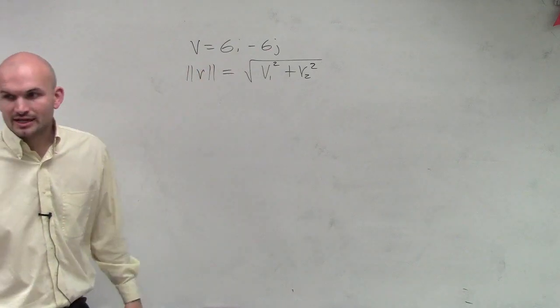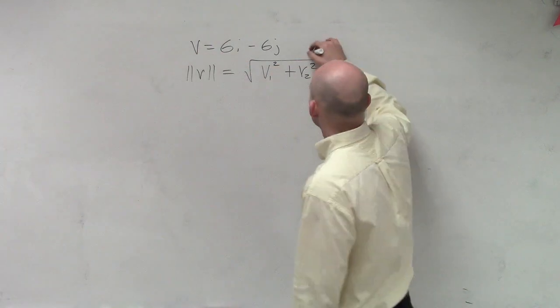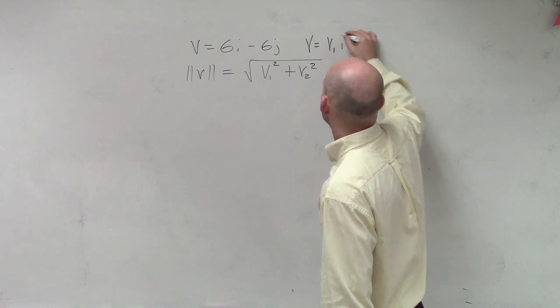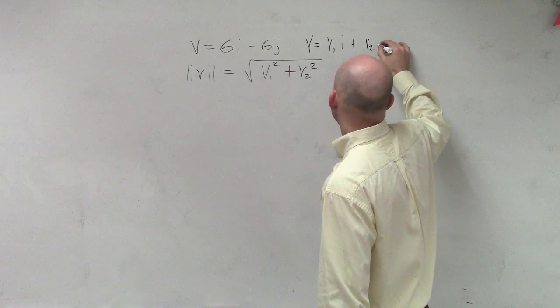Now remember, when something's written in linear combination, this is the same thing as v equals v1i plus v2j.